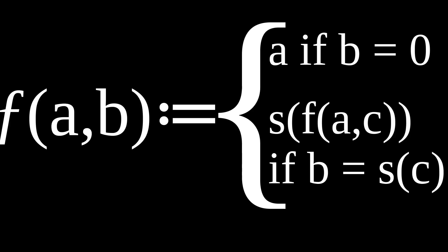What can we do with them? Here's a function. It takes two natural numbers, a and b, and outputs: if b is zero, then it just outputs a, and if b is the successor of some number c, then it outputs the successor of f of a and c.